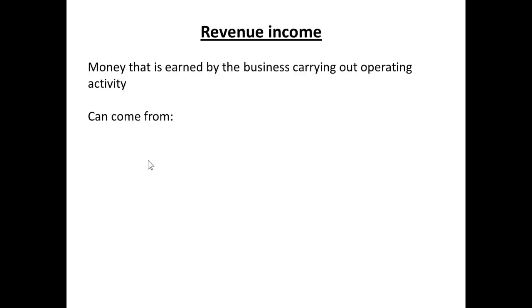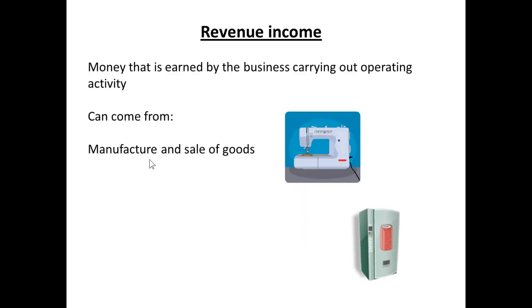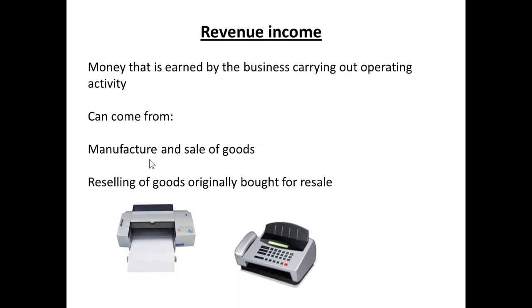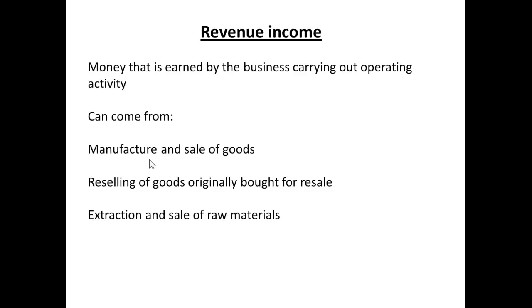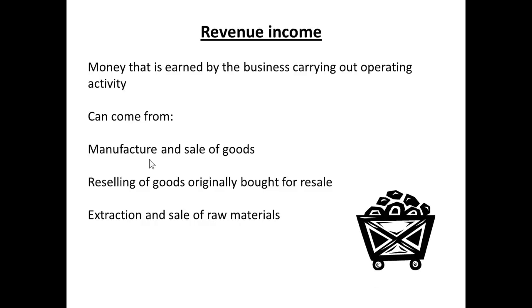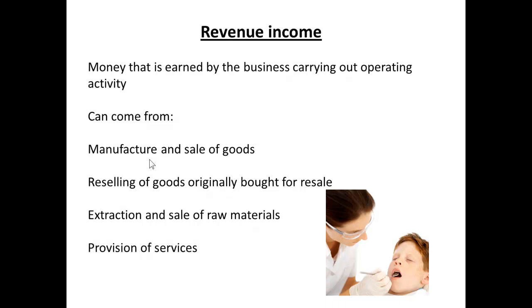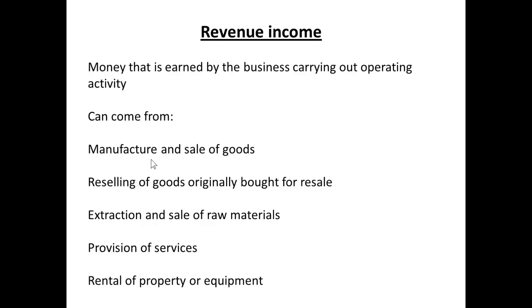Revenue income is money earned by the business carrying out its operating activities. It can come from the manufacture and sale of goods, from the reselling of goods originally bought for resale, from the extraction and sale of raw materials, or from the provision of services. All of these represent revenue income — income earned by the business through its operating activities. It can also come occasionally from the rental of property or equipment.